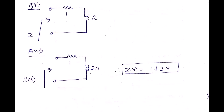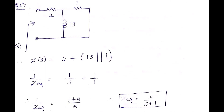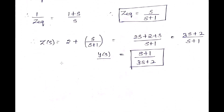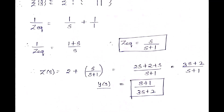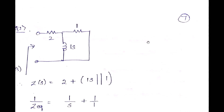In the next example, values are already given in Laplace transform form. It reduces to a normal series-parallel combination: 1 is in parallel with (1 + 2s). Solving this gives Z(s) = (s + 1) / (3s + 2). This was a driving point function example, where the impedance is measured at only a single port.